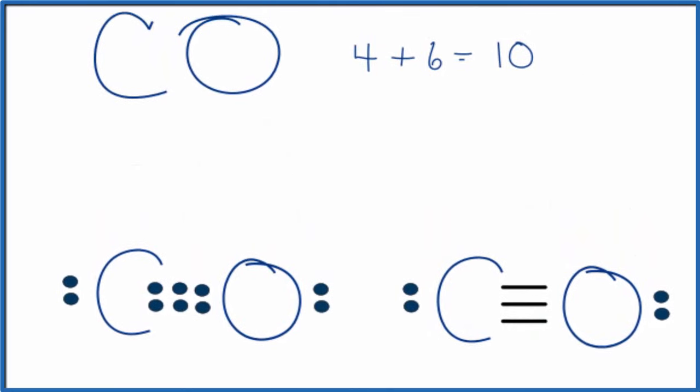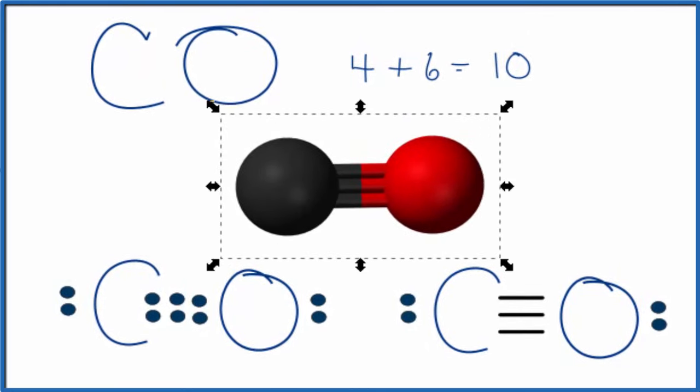If we look at the molecular geometry for CO, here's carbon black, oxygen is red. You'll see that since we only have two molecules, it'll be linear. Keep in mind, we'd also have these electrons, these unbonded electrons on the end. Our bond angle here would be 180 degrees.